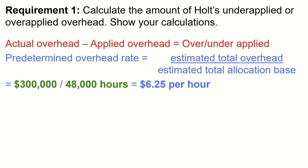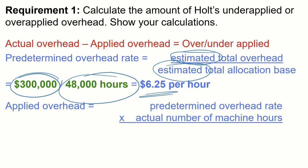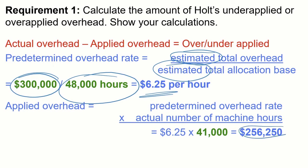The predetermined overhead rate uses the estimated amount of overhead divided by the estimated machine hours. Those numbers are given to us: $300,000 estimated overhead divided by 48,000 estimated machine hours gives us $6.25 per hour. That $6.25 per hour is multiplied by the actual machine hours of 41,000, giving us applied overhead of $256,250.